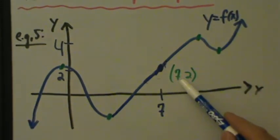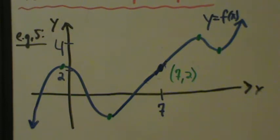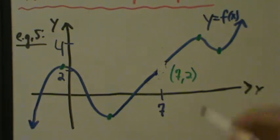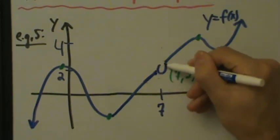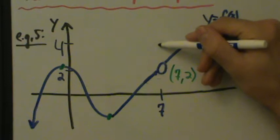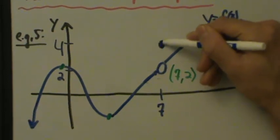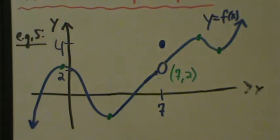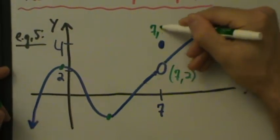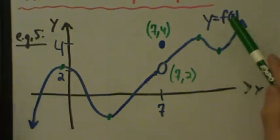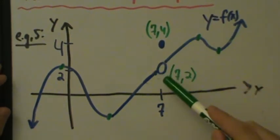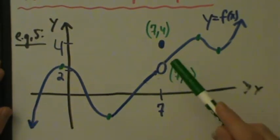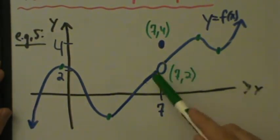What about this point (7, 2)? As it is, nothing special about it. But what if we remove that — we'll put an open circle here, and let's put the new point at (7, 4) up here. That's why we have 4 labeled. So now what happened — well, we just made the function discontinuous. There's a discontinuity — it's a removable discontinuity. When x equals 7, we have a removable discontinuity here.